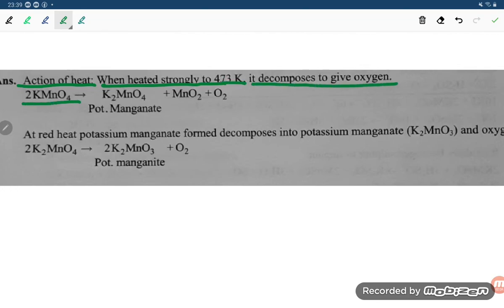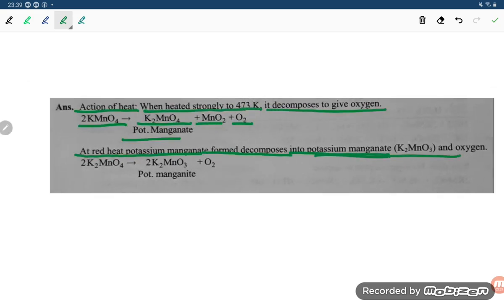At red heat, potassium manganate decomposes into potassium manganite K2MnO3 and oxygen. 2 K2MnO4 gives 2 K2MnO3 plus O2. You can see the equation also.